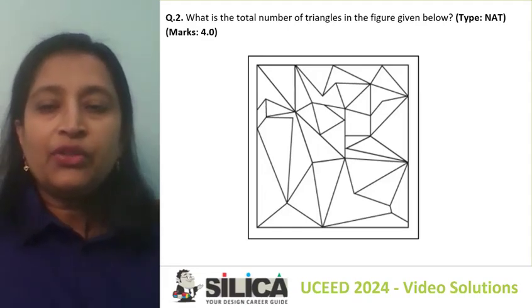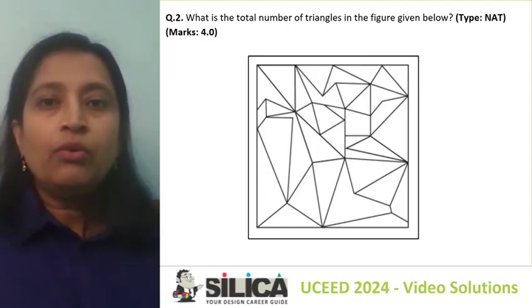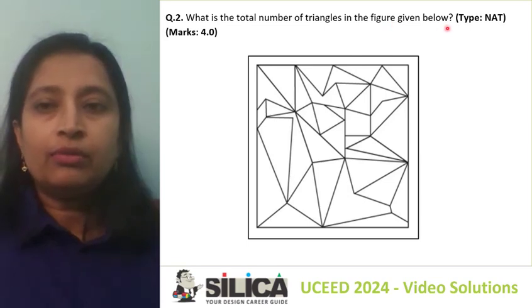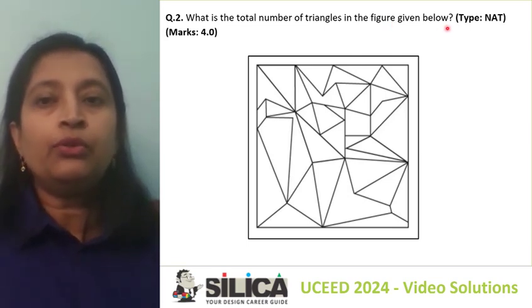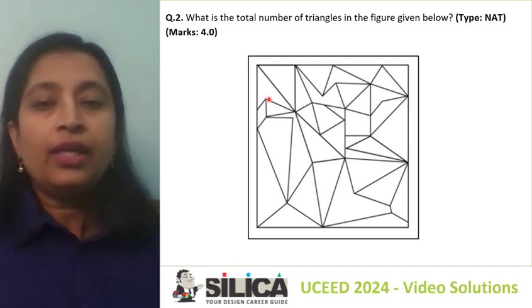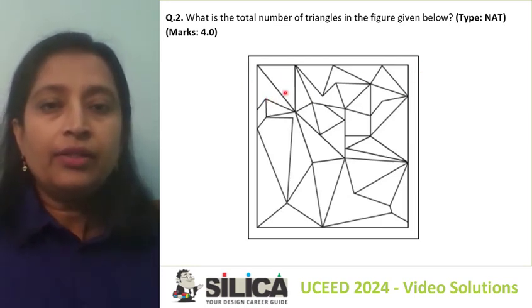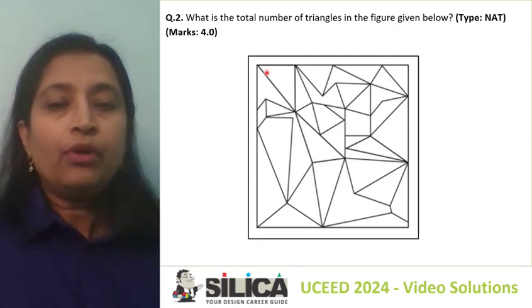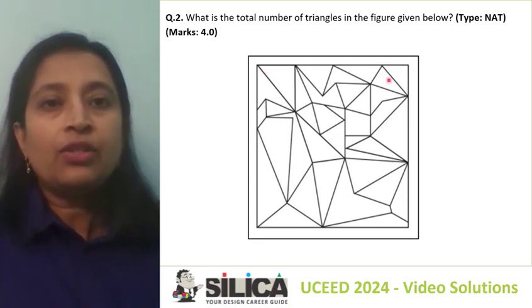Let's do this second question. The question says: what is the total number of triangles in the figure given below? This is a relatively easier question. To make sure we don't miss any triangles, we start taking them from one side — like triangles that are attached to the sides of the square first, where one or two points of the triangle are on that line.